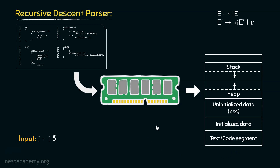Briefly discussing the segments: this is the text or code segment where the code actually resides. Here the initialized data, that is the initialized variables, are kept. On top of that, we have the segment for the uninitialized data, which is also called the BSS. This is an interesting one — here we have both the stack and the heap. The stack grows downwards, whereas the heap grows upwards.